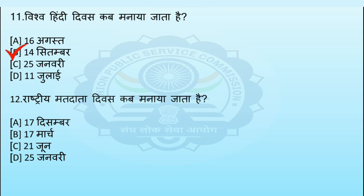अगला प्रश्न: राष्ट्रीय मतदाता दिवस कब मनाया जाता है? Option A: सत्रह दिसम्बर, Option B: सत्रह मार्च, Option C: इक्कीस जून, Option D: पच्चीस जनवरी। इस प्रश्न का सही उत्तर Option D – पच्चीस जनवरी है।